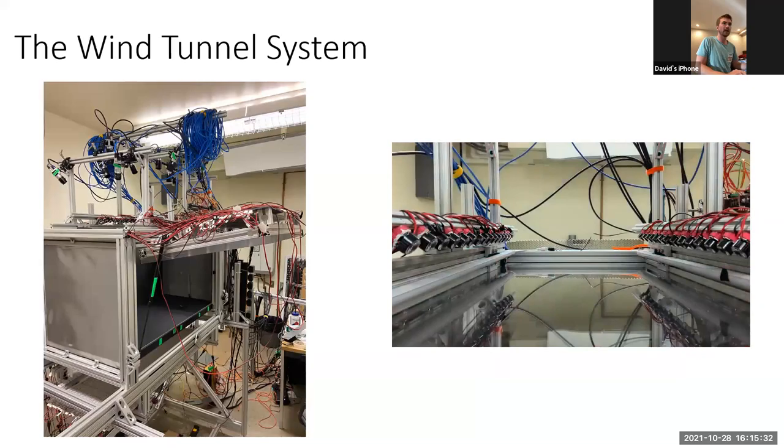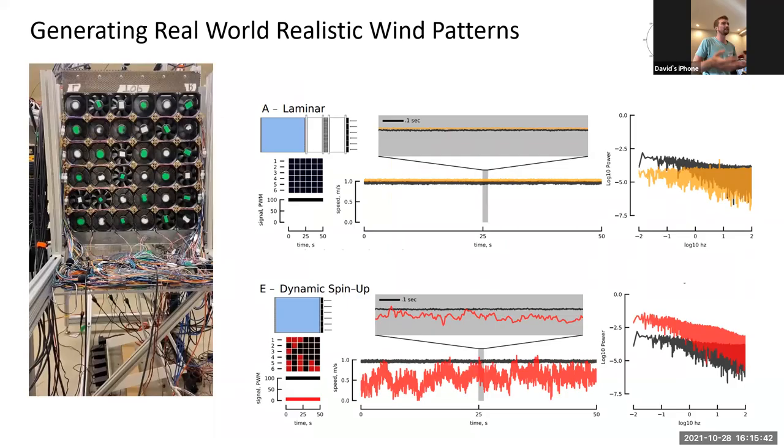And so we also want to be able to control the wind environment. So we built this wind tunnel with a six by six fan array. And so what this allows us to do is, we can dynamically control each one of these fans individually. And that allows us to do things like we can create a very laminar flow in the wind tunnel, we can activate them haphazardly, constantly turning them on and off to create all kinds of chaotic and turbulent air flows as well to see how the wind environment changes how an insect navigates for an odor.